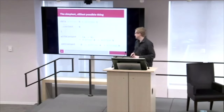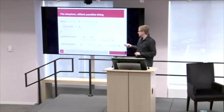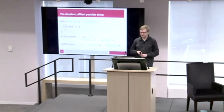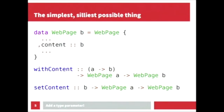The one I'm going to talk about is the simplest, silliest change that you can make to this data structure — a kind of type parameter I've used a couple of times that has some really interesting properties, even though it looks utterly silly. We add a new B type parameter to webpage, get rid of the reference to the content newtype, and that field in the record type is just whatever that type parameter is.